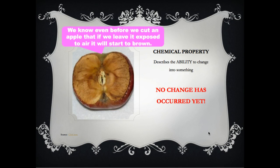Chemical properties are different from physical properties. With physical properties we look at things that are easily observable and measurable. With chemical properties we are looking at the ability of that object to change into something else. When I say ability, it means that it has not occurred yet — we just know that it can happen.